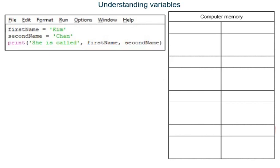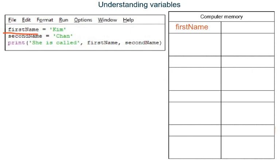When data is stored in a variable we say the data is assigned to the variable. In Python the equals sign is used to tell the program to assign the data that is on the right-hand side to the variable that has been named on the left-hand side. Line 1 creates a variable named first name, then assigns the string Kim to this variable. Line 2 creates a variable named second name, then assigns the string Chan to this variable.